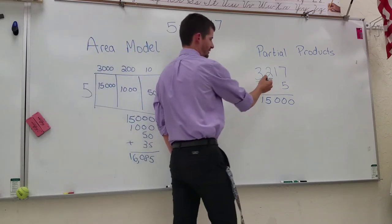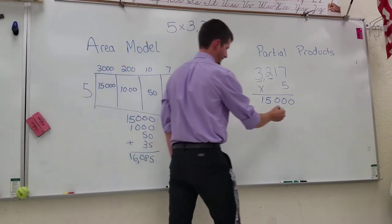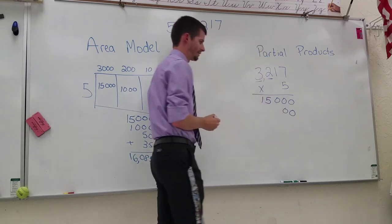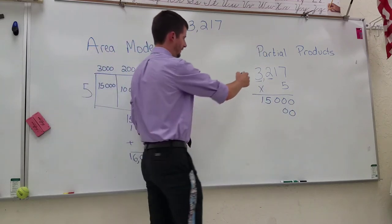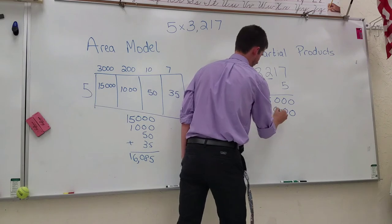Alright, so I did the thousands, now I'm going to work on the hundreds, 5 times 200. So I'm going to have two zeros because that's 100, and then 5 times 2 would be 10, which gives us 1,000.